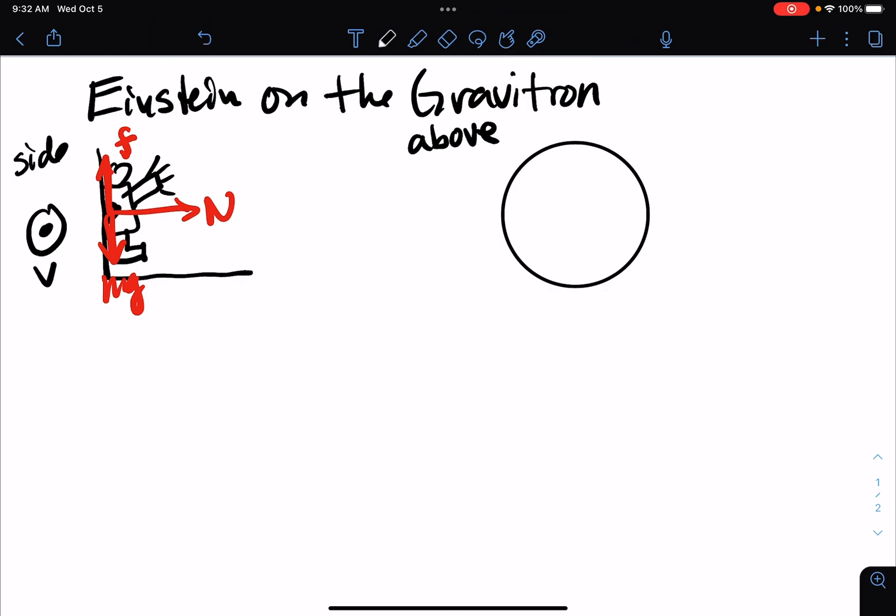If we go back to an above view, and again, there's Einstein's center of mass. The speed V is this direction. Speed V is this direction.